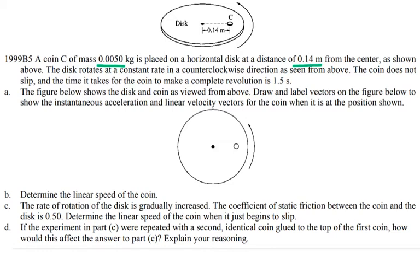The disk rotates at a constant rate in a counterclockwise direction as seen from above. The coin does not slip, and the time it takes for the coin to make a complete revolution is 1.5 seconds.